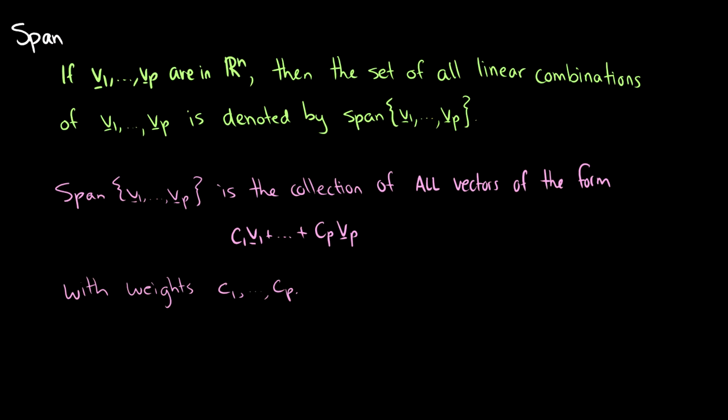In this video we're going to talk about the span of vectors. Here's the definition of a span: if vectors v1 through vp are in Rn, then the set of all linear combinations is denoted by the span of v1 through vp. It's just the collection of all vectors of the form c1 times v1 plus c2 times v2 all the way up to cp times vp, with weights c1 through cp.